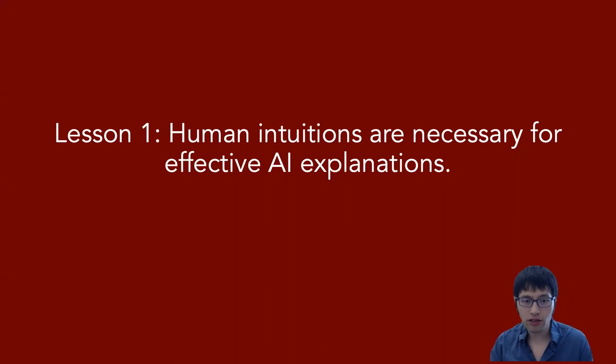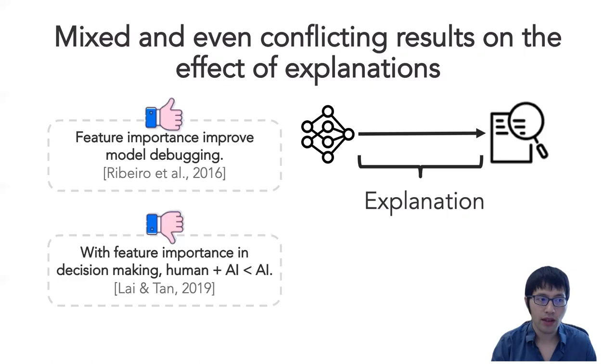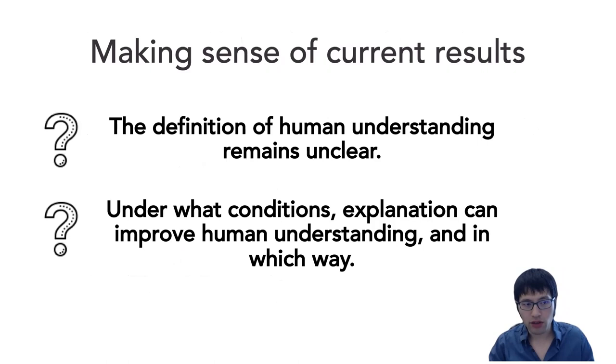The first is human intuitions are necessary for effective AI explanations. Second, I build on lesson one and try to provide a recipe for generating human-centered explanations. First, we need to articulate the interaction between explanations and human intuitions, then collect data and models. Finally is a corollary of the first two: I want to emphasize the point that one size doesn't fit all. So let's start with lesson one. Human intuitions are necessary for AI explanations.